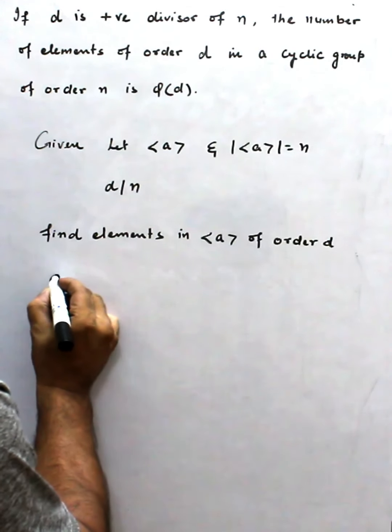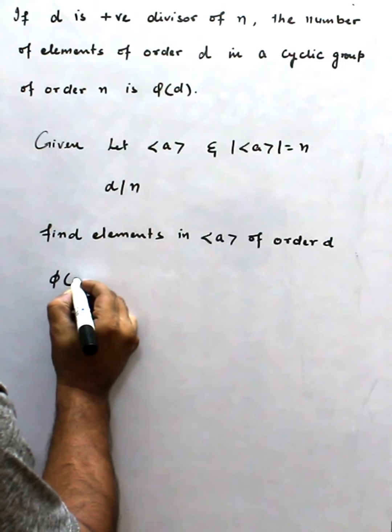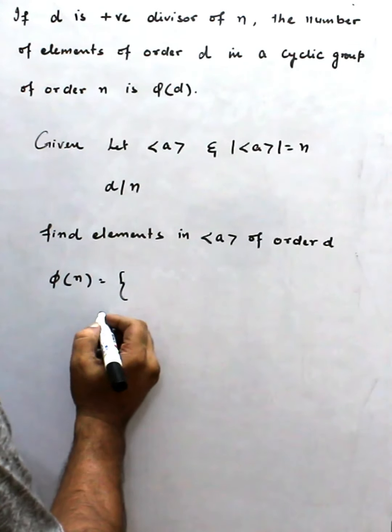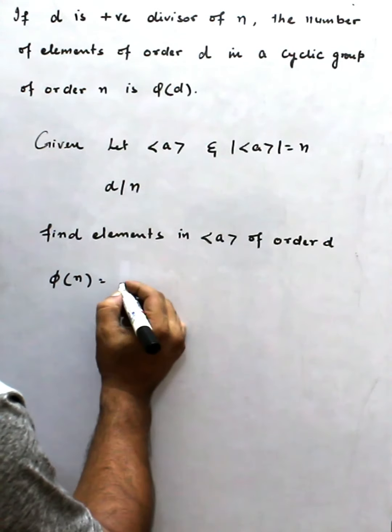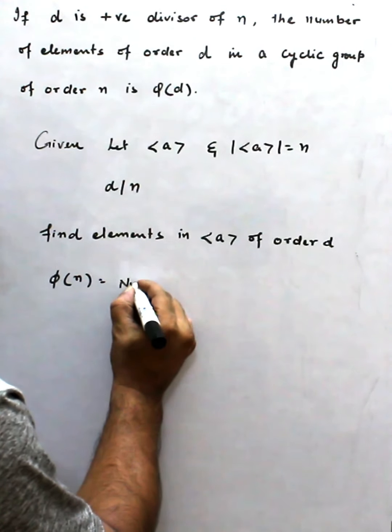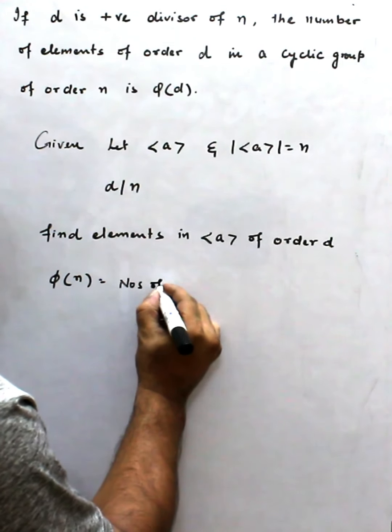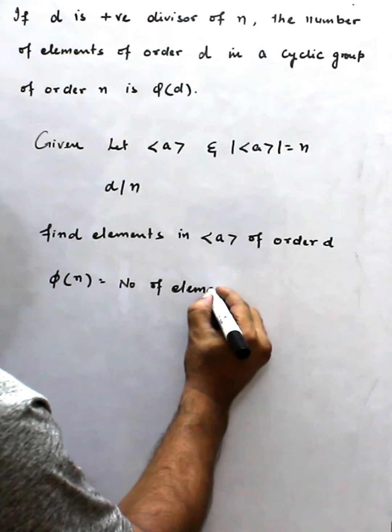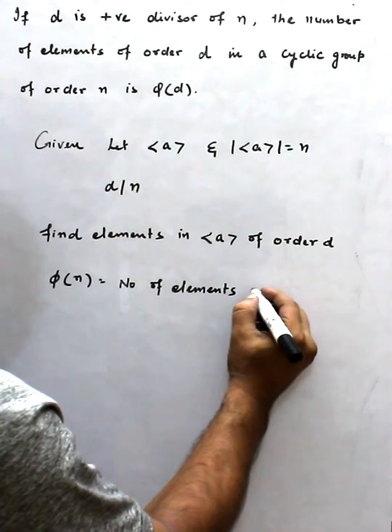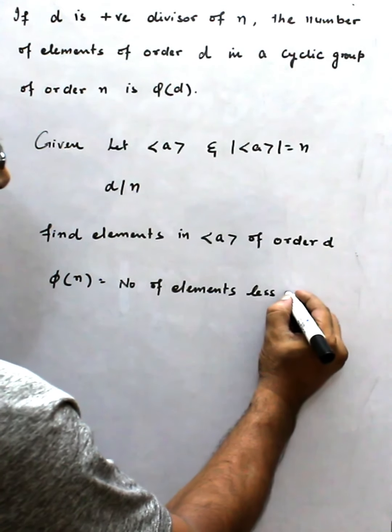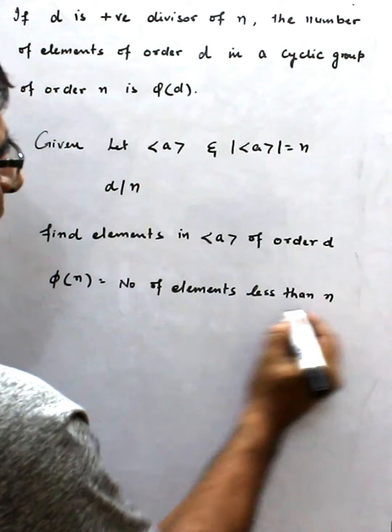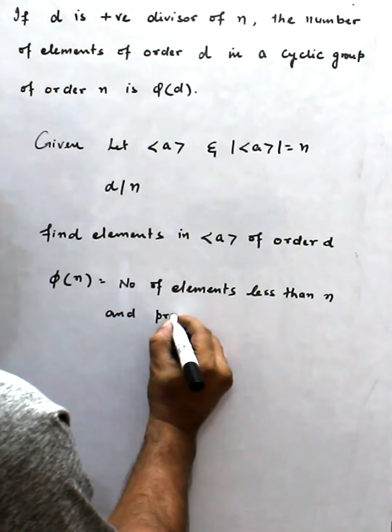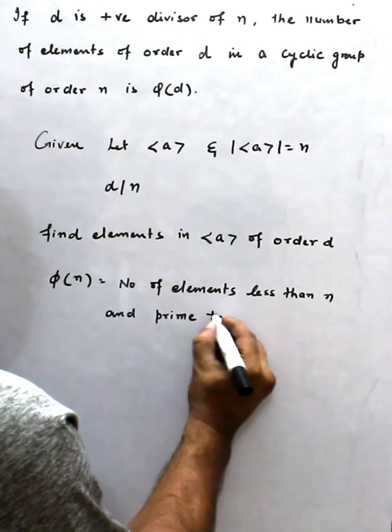What is φ(d)? First, I'll define φ(n). φ(n) is the number of elements less than n and prime to n.